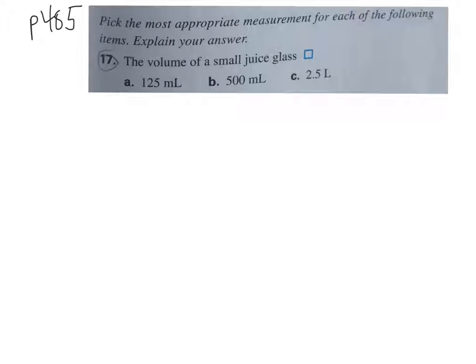The only other type of problem with just pure metric system is on page 485, number 17 — they'll tell you an item, and you have to decide which is the most appropriate measurement. Some of the ones in the book are actually pretty difficult to tell sometimes; you've got to really know your measurements.